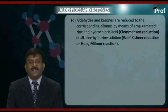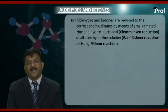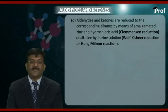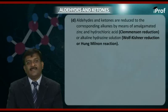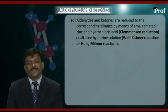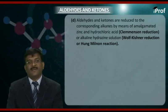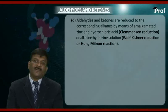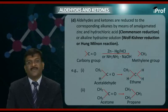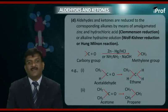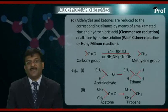Next, aldehydes and ketones are reduced to the corresponding alkanes by means of amalgamated zinc and hydrochloric acid. This is called Clemmensen reduction. An alternative method using alkaline hydrazine solution is called Wolf-Kishner reduction, also commonly known as the Huang-Minlon reaction. The carbonyl group in presence of zinc-mercury amalgam and HCl gives the corresponding compound having a methylene group.